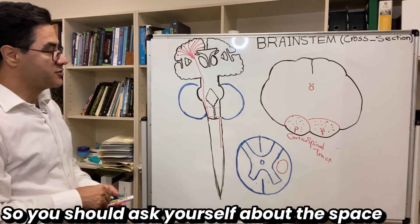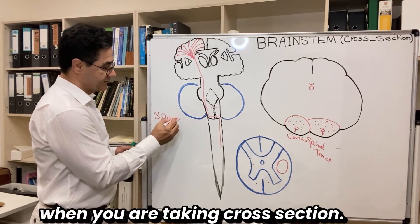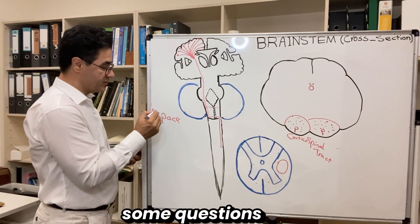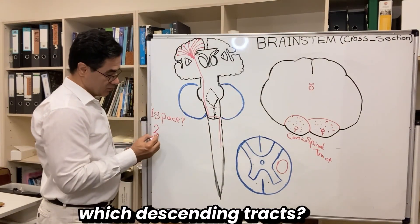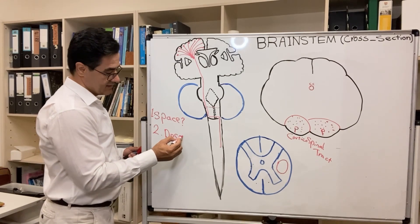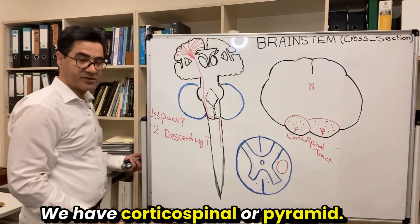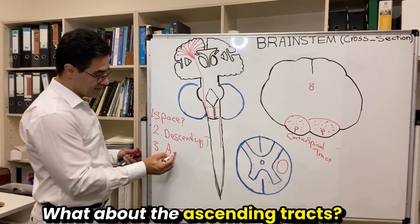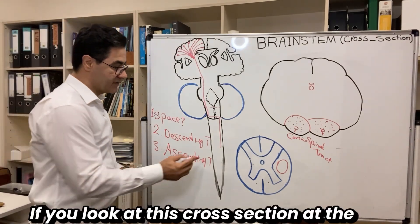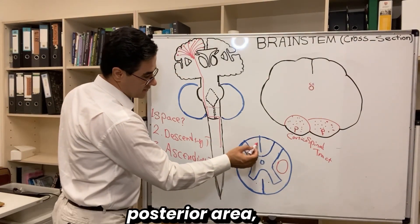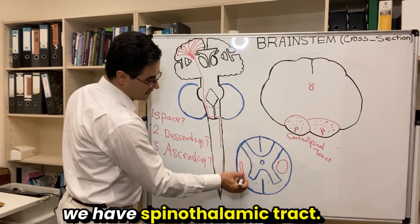You should ask yourself about the space when taking a cross-section. Which space are we in? We are at the central canal. Which descending tracts do we have? We have the corticospinal tract in the pyramid. And what about the ascending tracts? We have plenty of ascending tracts. If you look at the posterior and lateral area of this cross-section, at the lateral column tract, we have the spinothalamic tract.